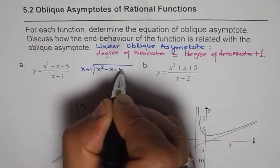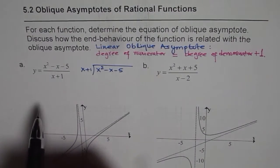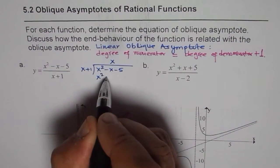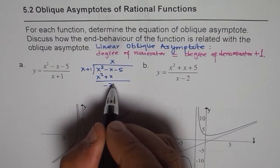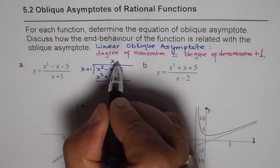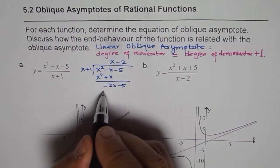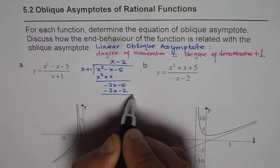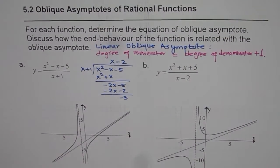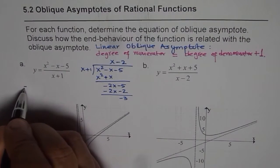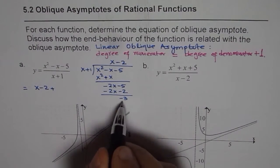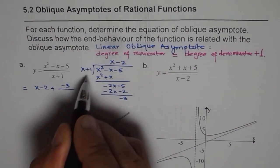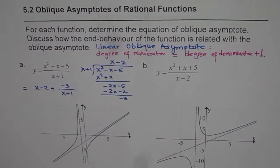We divide x² - x - 5 by x + 1. It goes x times, giving x² + x. Taking away, we get -2x - 5. Multiplying by -2 gives -2x - 2, and the remainder is -3. So we can write this rational function as x - 2 plus the remainder -3 over (x + 1).